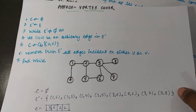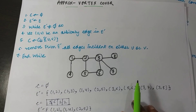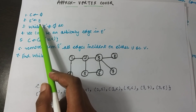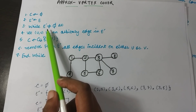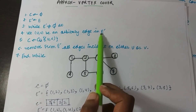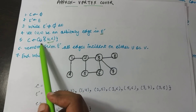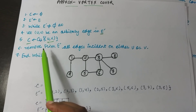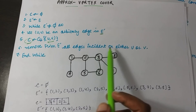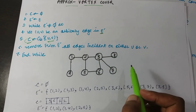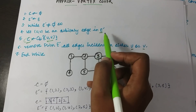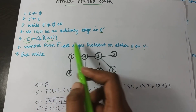Our next approach is the approximate vertex cover algorithm. Initially, C is an empty set that will hold our solution vertices, and A is the set of all edges in the graph. The loop runs until all edges are selected: we arbitrarily choose any edge from the set, add its two endpoints U and V to the solution set C, and remove all edges incident on either U or V. We repeat this until no edges remain.